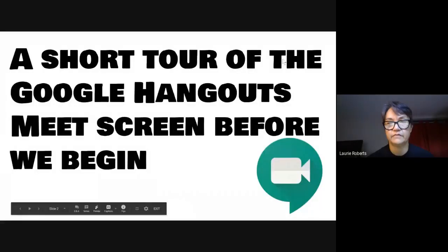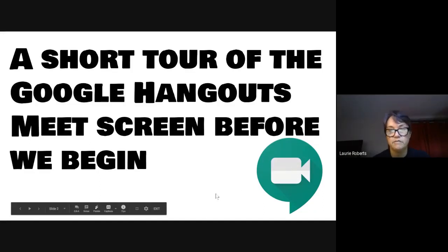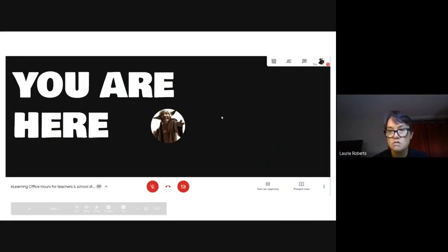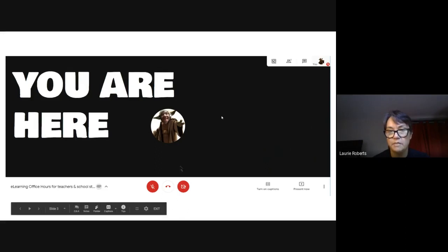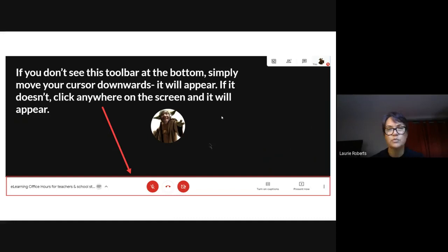All right, so really quickly if you haven't been in a Google Hangout yet, here's a short tour of the Google Hangouts Meet screen before we begin. This is where you want to be looking for this toolbar at the bottom. If it's not there, all you have to do is either click on the big screen or move your cursor downward — it should appear. It's one of those that pops in and out to give you more room to see who's on screen.